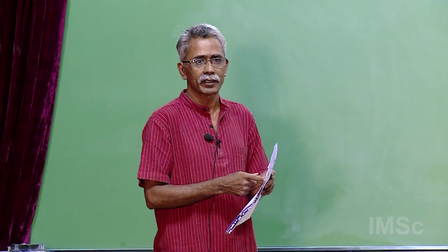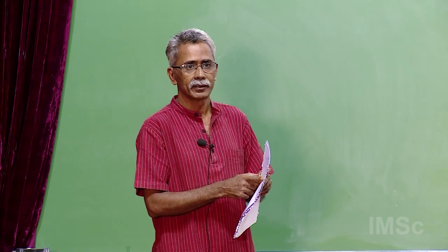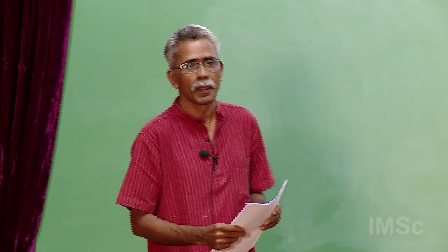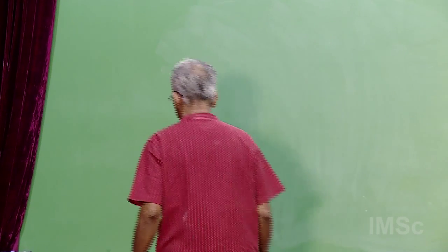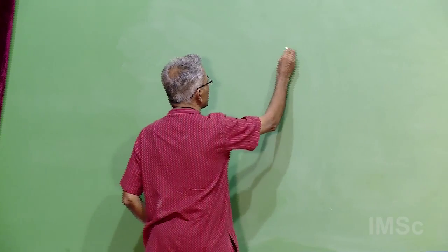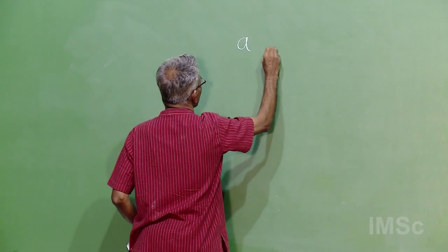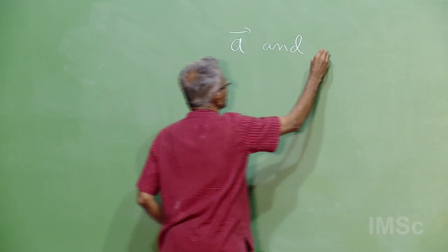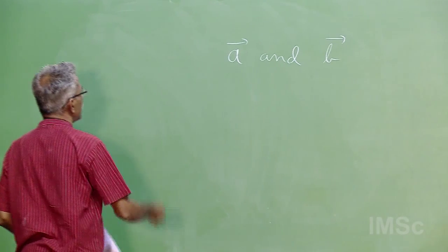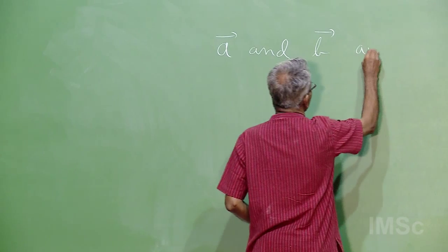Let me begin with the following question: How to explain scalar product graphically, and also vector product? Did you discuss that, Raghavan? Scalar product and vector product, graphically.